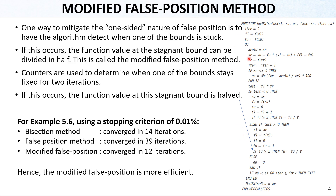The algorithm for the modified false position uses the standard false position formulation with an added check: if the upper bound increment IU stays the same for two or more iterations, then FU is divided by two. Similarly, for the lower bound, if IL stays the same for at least two iterations, then the lower bound function value is divided by two. This if-condition is the modified part of the false position method, and you can simply write a MATLAB code using this algorithm.